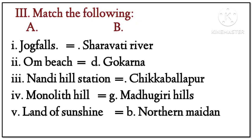Question number 3 — Match the following. Column A to Column B: Jog Falls — Sharavati River; Om Beach — Gokarna; Nandi Hill Station — Chikkaballapur; Monolithic Hill — Madhugiri Hills; Land of Sunshine — Northern Maidan.